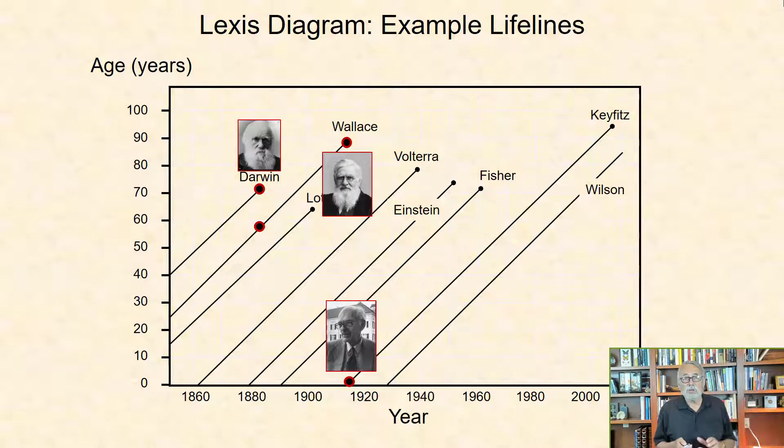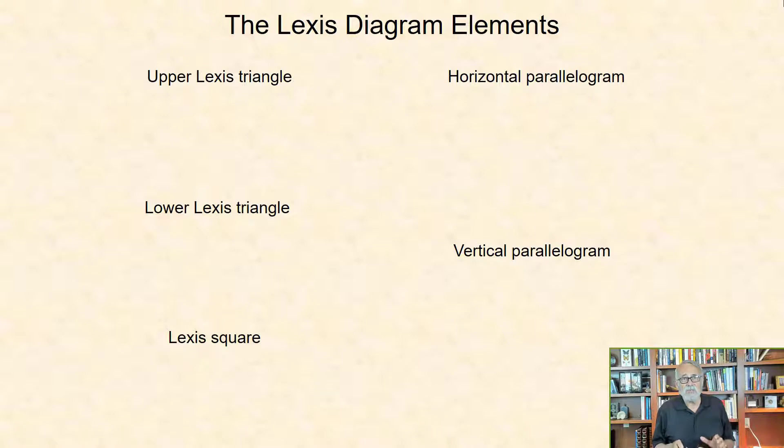The Lexis Diagram consists of five different elements, each of which depicts a different age-period-cohort relationship. Using ages 10 and 11 as examples, and 1900 and 1901 for example periods, I will illustrate each of these elements.